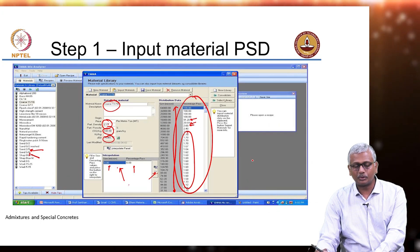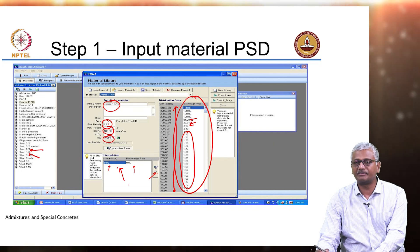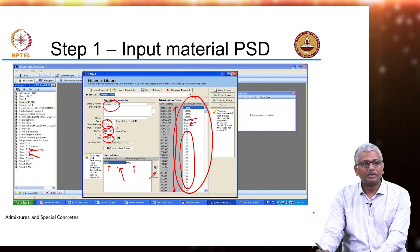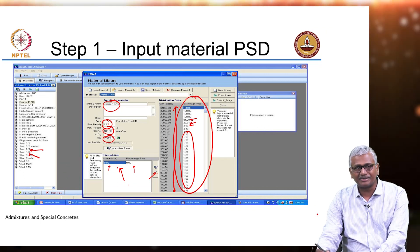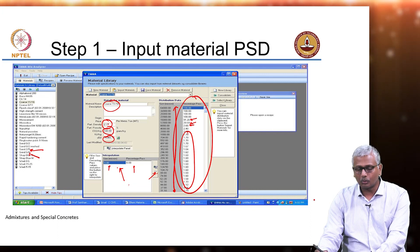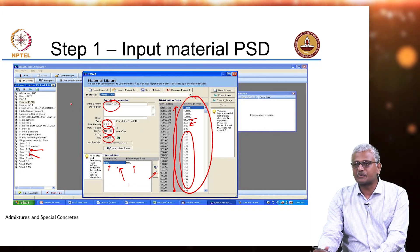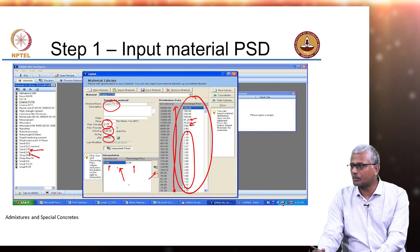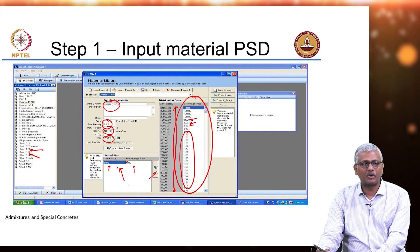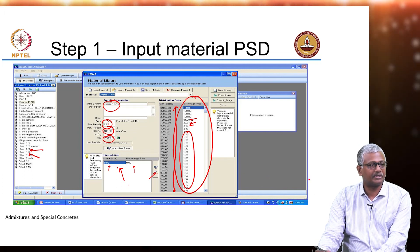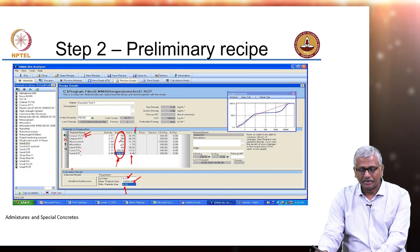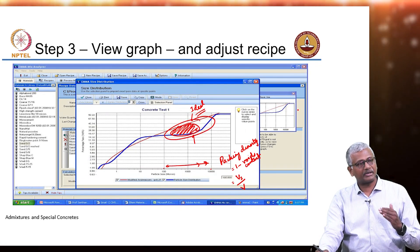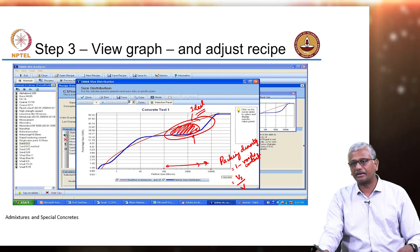I also took you through the steps in the software titled EMA — Elchem Materials and Mixture Analyzer — which is available for download from the Elchem site, though lately there has been some difficulty downloading it. You can also set this up as an Excel macro to calculate the ideal gradation required from the set of ingredients you are putting into the system. The idea is to bring the combined particle gradation as close to the ideal gradation as possible.